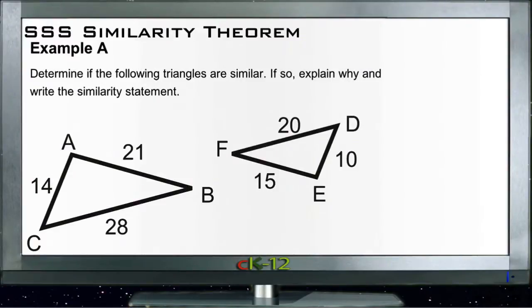We have the questions here for the examples for the SSS similarity theorem. Recall that the SSS similarity theorem tells us that if we can identify all three sides of two triangles are in proportion with each other, then we know the two triangles are similar and that they are the same shape, just different sizes.